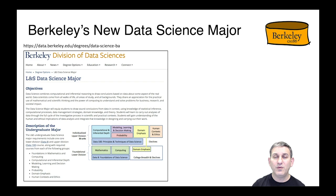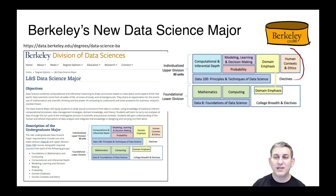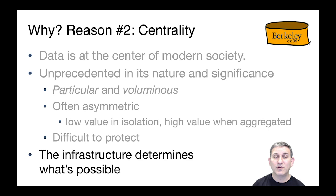Here at Berkeley, we have a new data science major and we're taking this very much to heart. As part of that major, we have an explicit focus and requirement on human contexts and ethics — courses you have to take to satisfy the major. We have scholars from all over campus teaching courses that satisfy this requirement, not just technologists. That marriage of technology requirements and ethics requirements is a key part of how we view data science here at Berkeley.